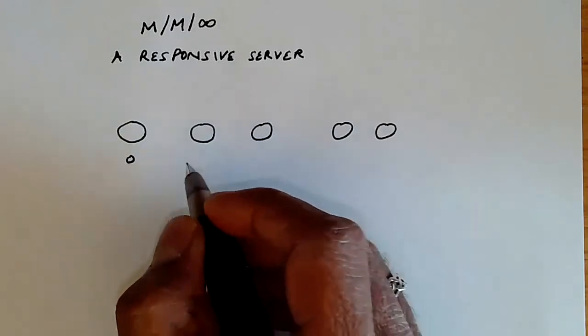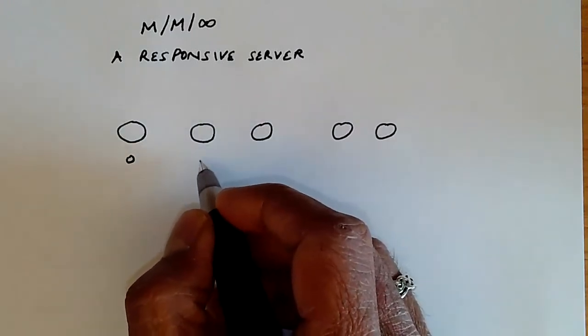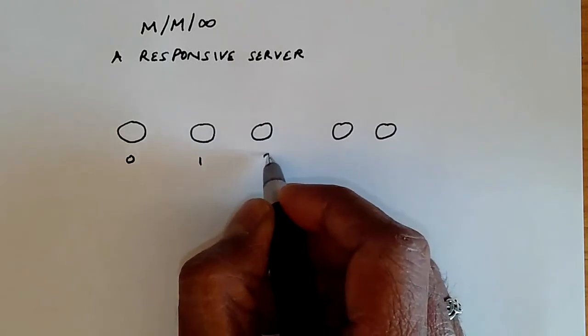It's again a birth-death process because we have arrivals and departures. So we have 0, 1, 2, et cetera.